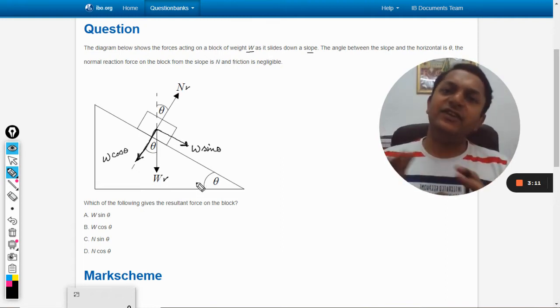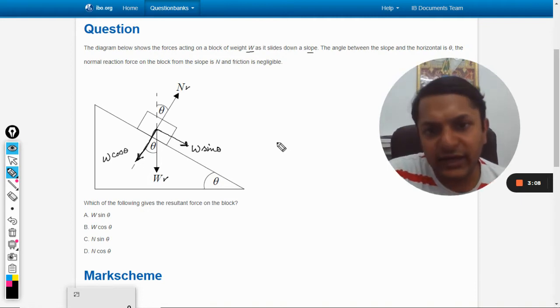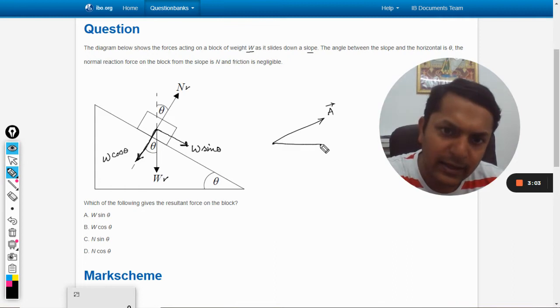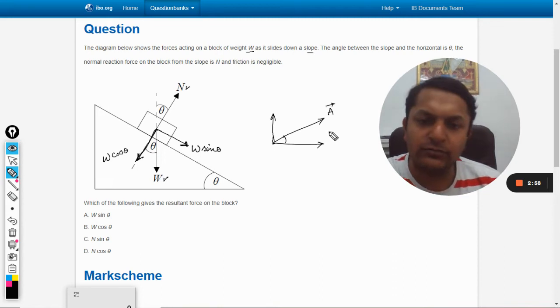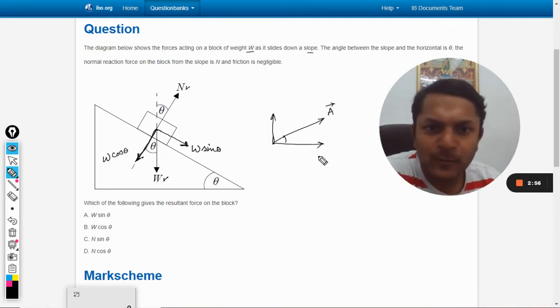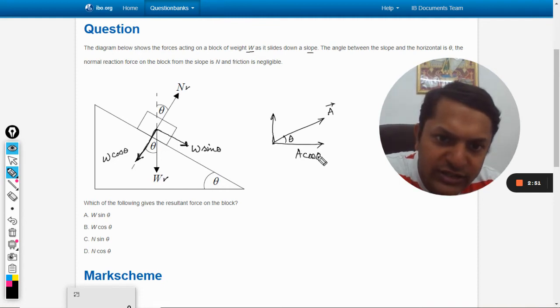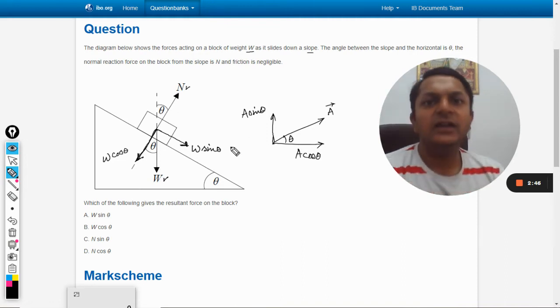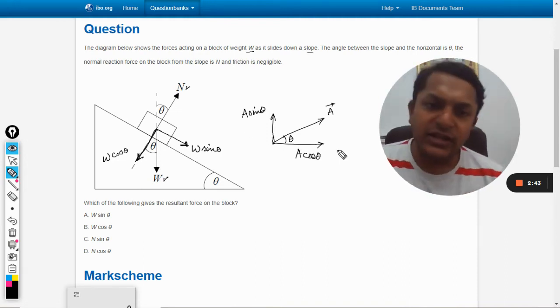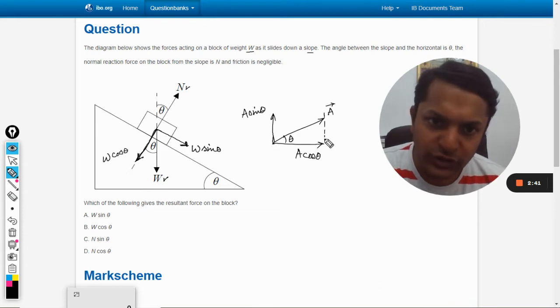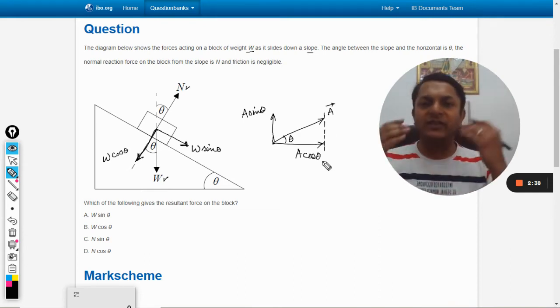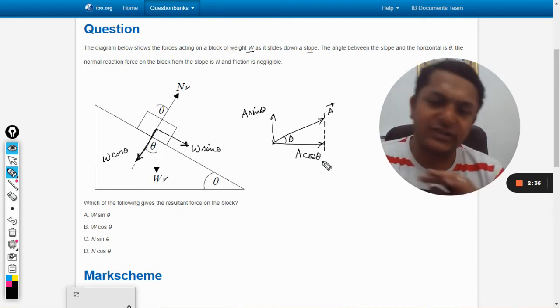See this is the way we resolve a vector into two components. If this is a vector, these are the two components and this is theta, so the lower one is A cos theta and this one will be A sin theta. This is how it works. The triangle can be created here. I hope you know how to do this. If you have any problem with this also, please do mention in the comment section.